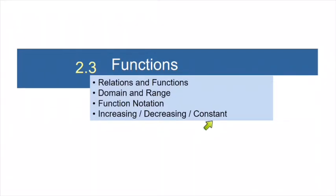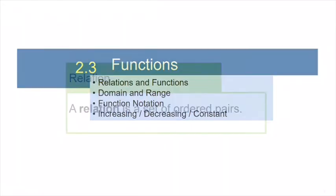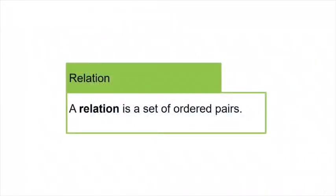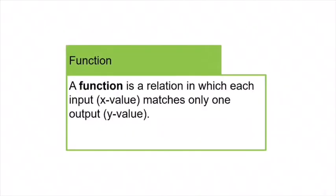I'll show you how to use function notation, and then we'll talk about how to determine where a function is increasing or decreasing or constant. So let's go ahead and get started. Our first definition is that a relation is any set of ordered pairs.